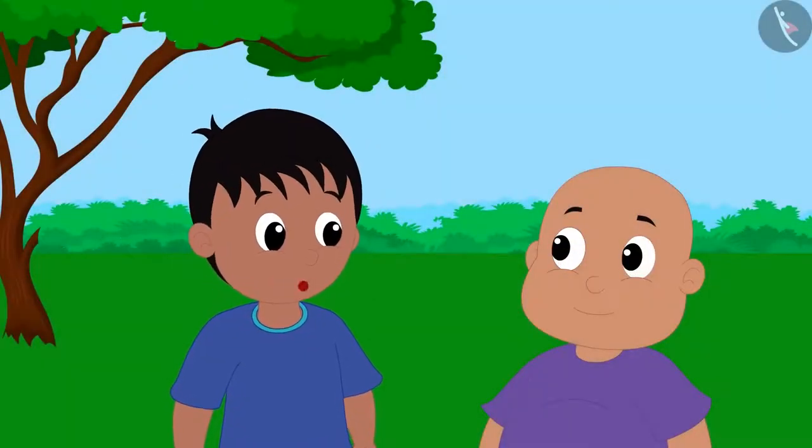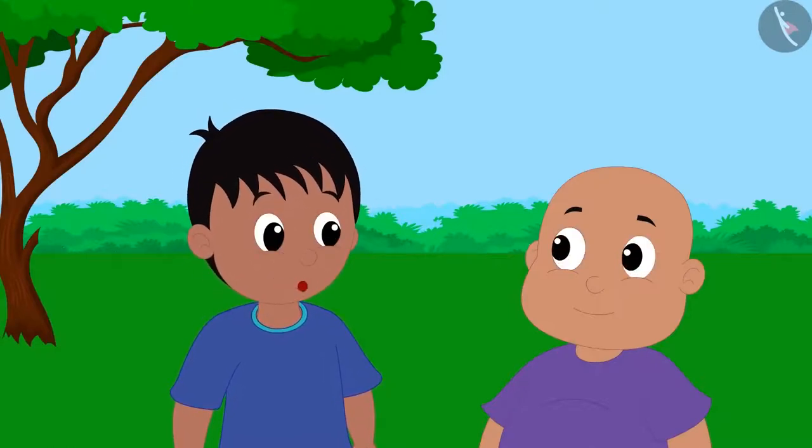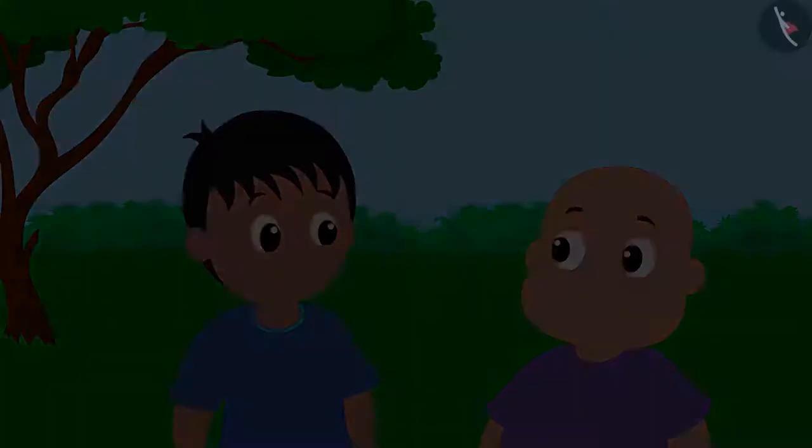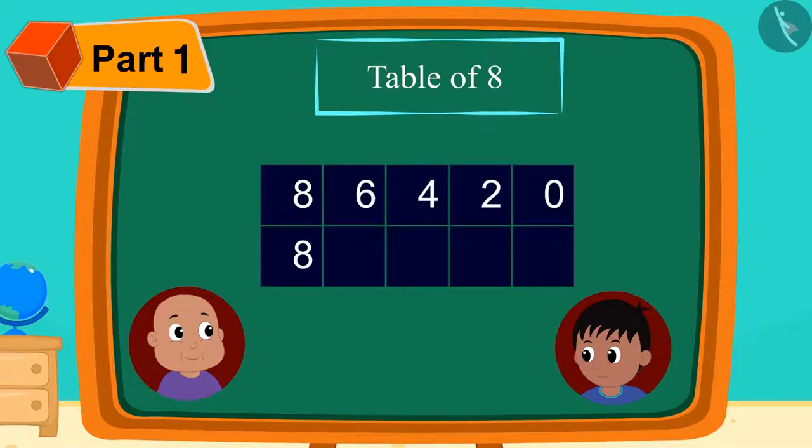Now Raju is telling Bablu that he can easily make a table of 8 using a similar pattern. Raju once again made such a table. Now he filled these patterns in both lines.